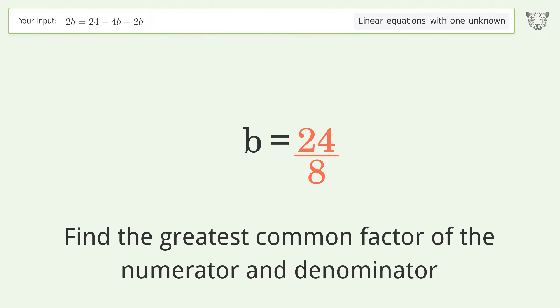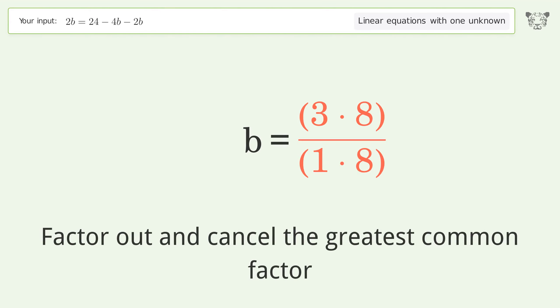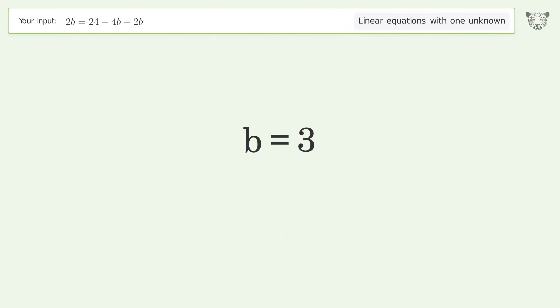Find the greatest common factor of the numerator and denominator. Factor out and cancel the greatest common factor. And so the final result is b equals 3.